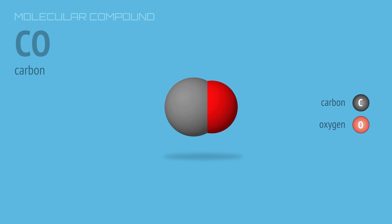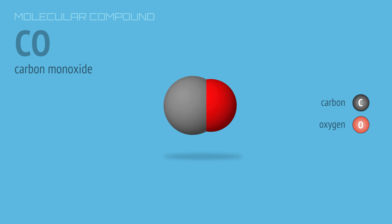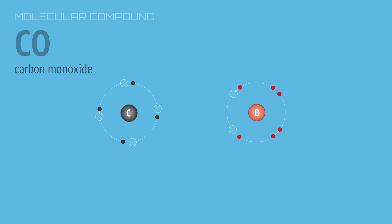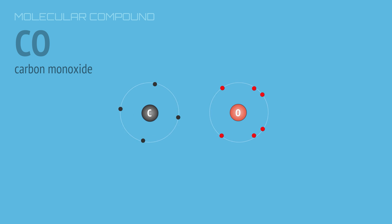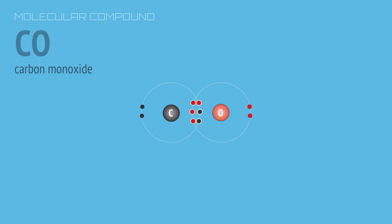Carbon can also form a triple bond, as it does in a molecule of carbon monoxide. In this molecule, three pairs of electrons are shared between the carbon and oxygen atom, completing the outer electron shells of both the carbon and oxygen atoms.